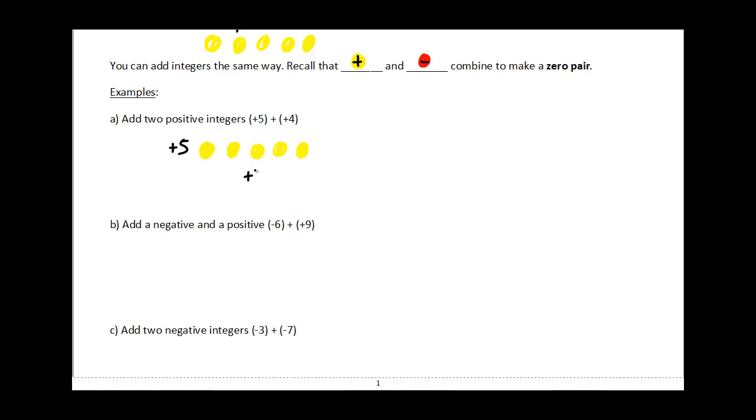I want to add to that positive four: one, two, three, four. That's plus four. Then I can just add them up and that makes positive nine.